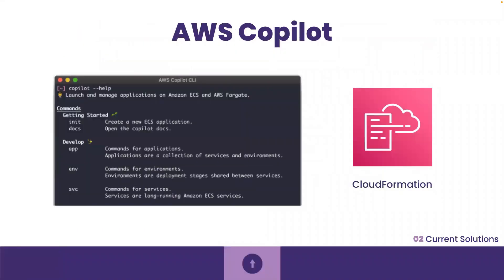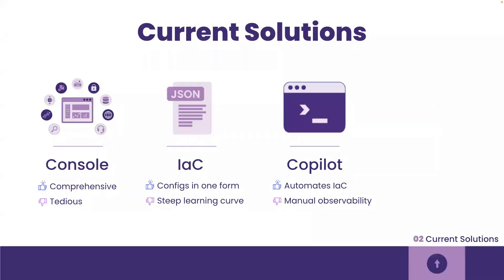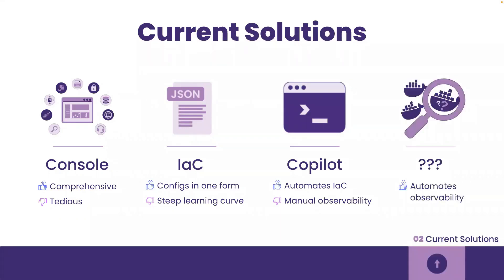There are solutions that attempt to automate using IaC tools. AWS Copilot is an opinionated ECS CLI that removes the need for the user to know anything about the underlying AWS network resources or container orchestration for application deployment. Instead, Copilot uses CloudFormation, an AWS IaC tool, to deploy AWS cloud resources. It also provides those CloudFormation files for the engineer to build upon if they want to expand any resources. Each solution we just looked at incrementally automates part of the deployment process, but there is no solution that also automates observability — and that's why we built Cascade.